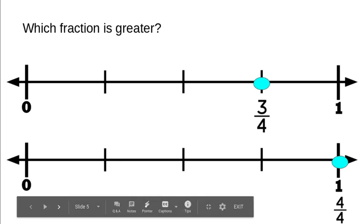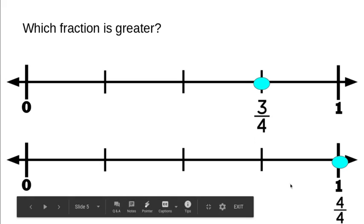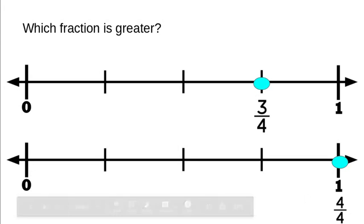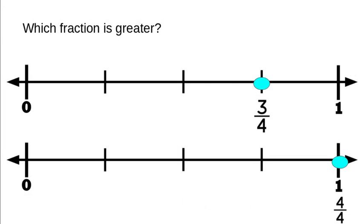Our next slide shows two number lines and asks which fraction is greater. The two number lines are broken up into fourths. The first one shows three fourths and the second fraction shows four fourths. Which one is closer to a whole — or in this case, is a whole? Four fourths is greater. It's the actual one — it becomes a whole number, so it is greater than three fourths.